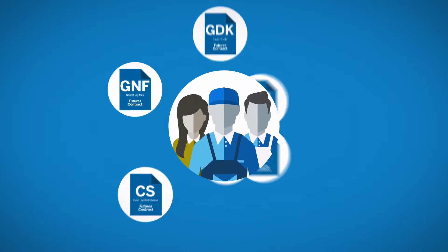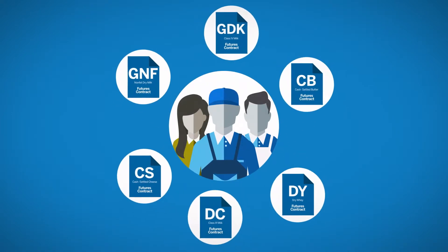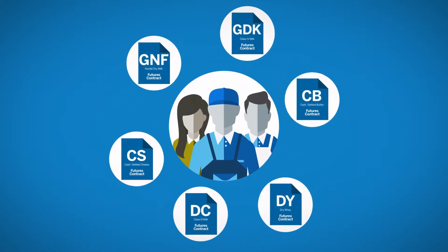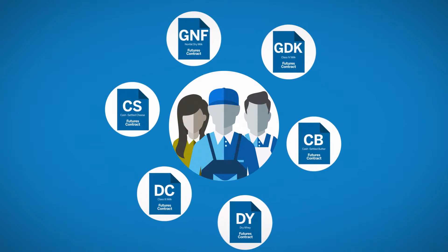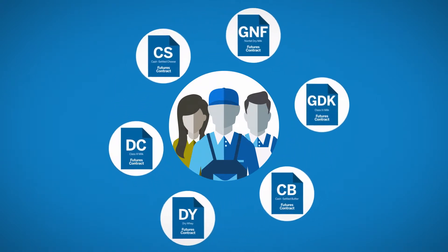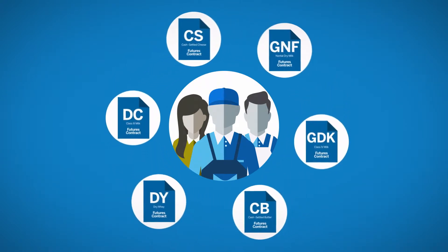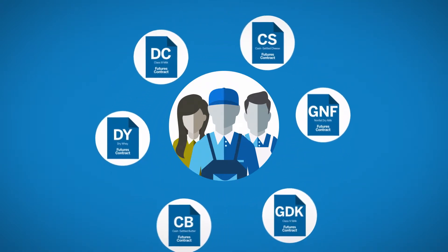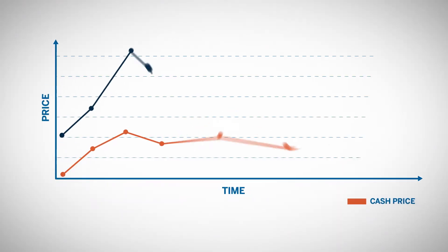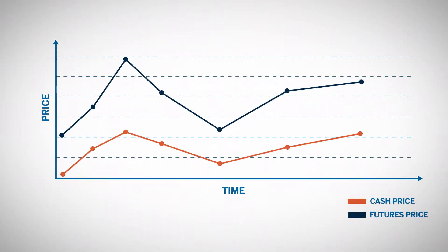The futures markets for dairy products indicate the prices for those commodities that are discovered through buying and selling at the exchange, representing the culmination of the forces of supply and demand. Cash prices and futures prices tend to move up and down together, which is what makes the concept of hedging possible.